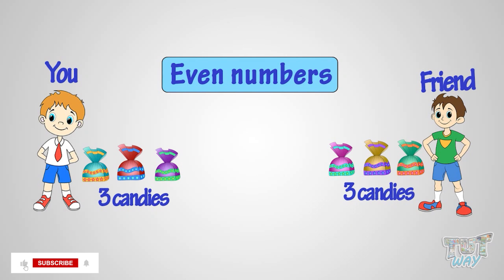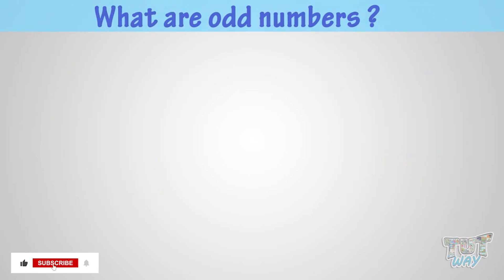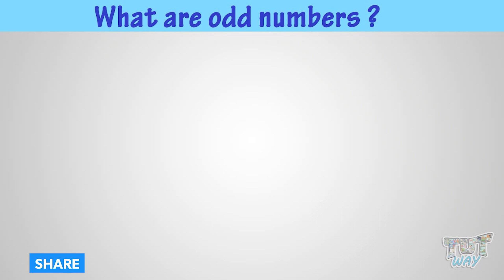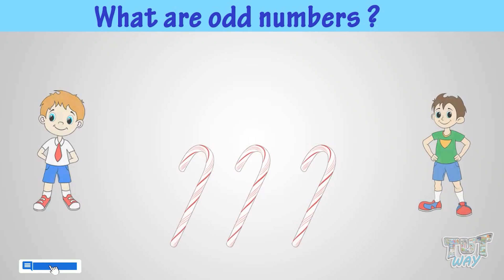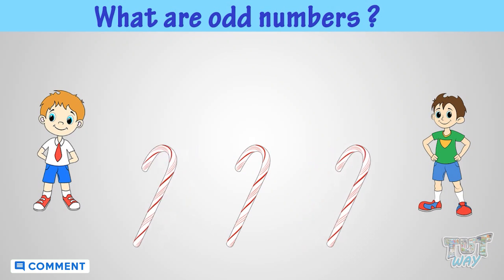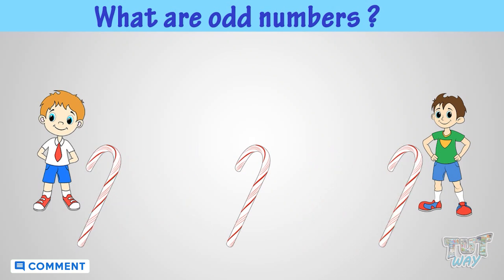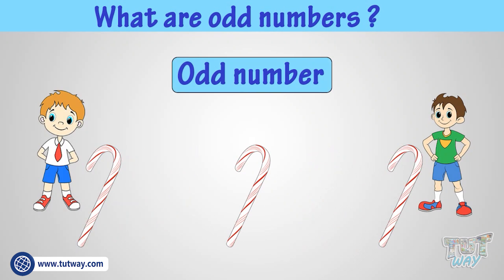Now let's learn what are odd numbers. It's exactly the opposite of even numbers. That is, if you cannot share a number of things equally between the two, they are odd number of things.